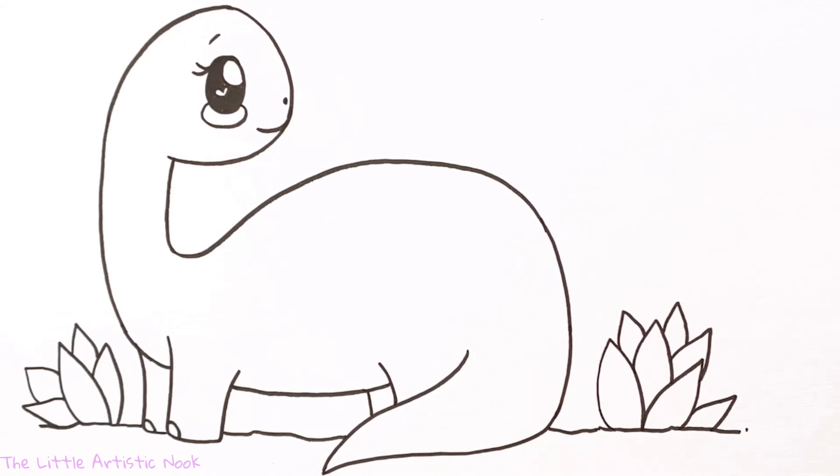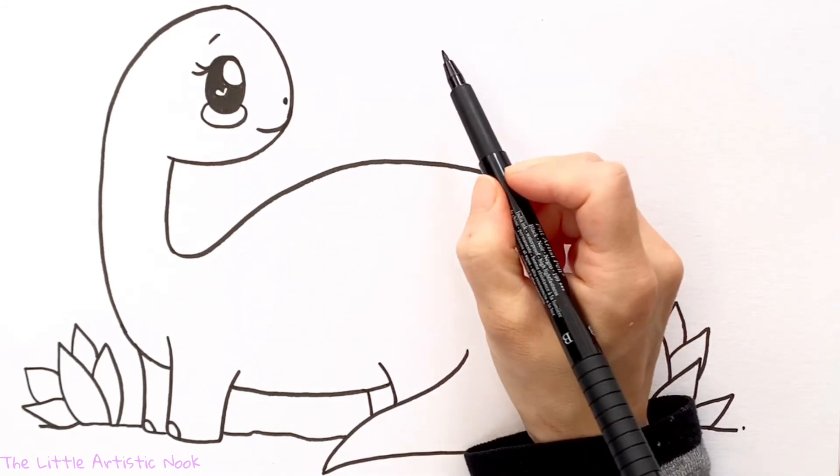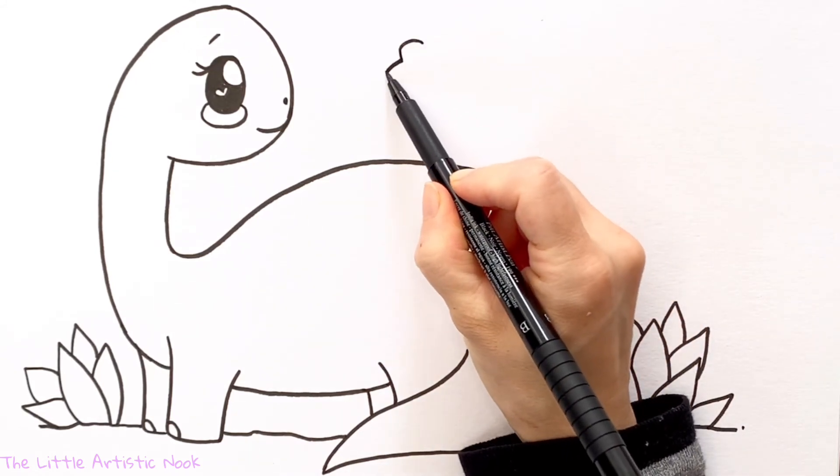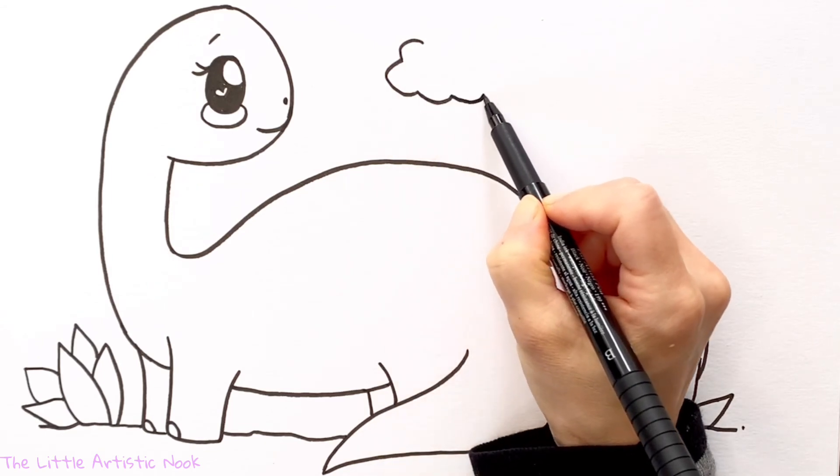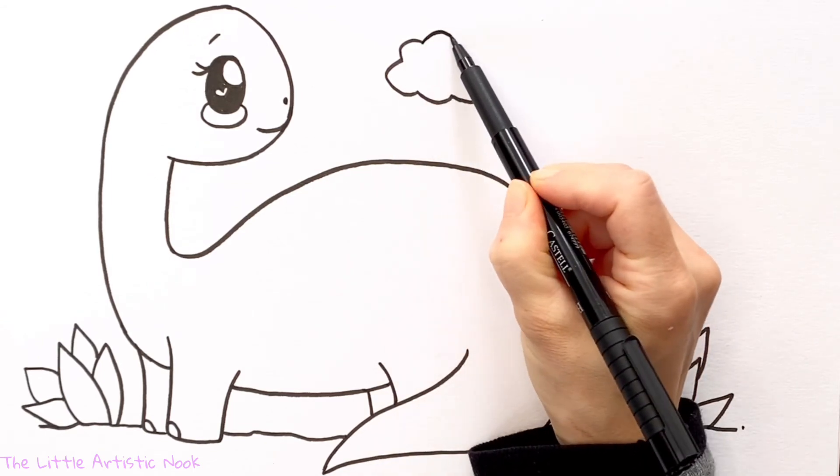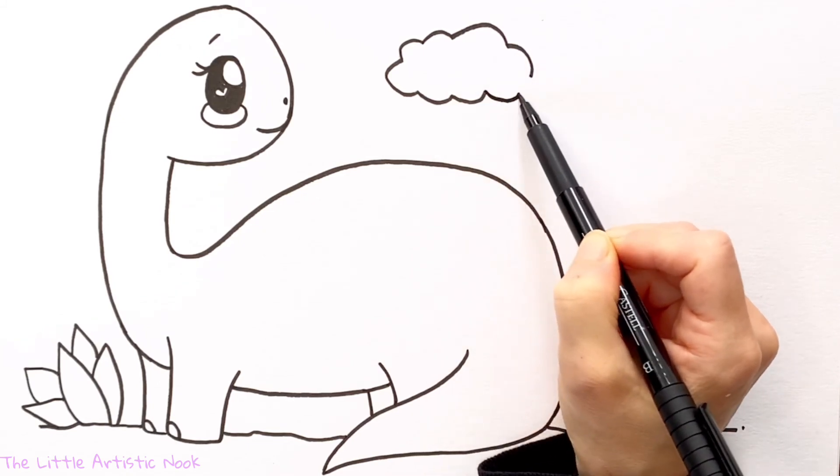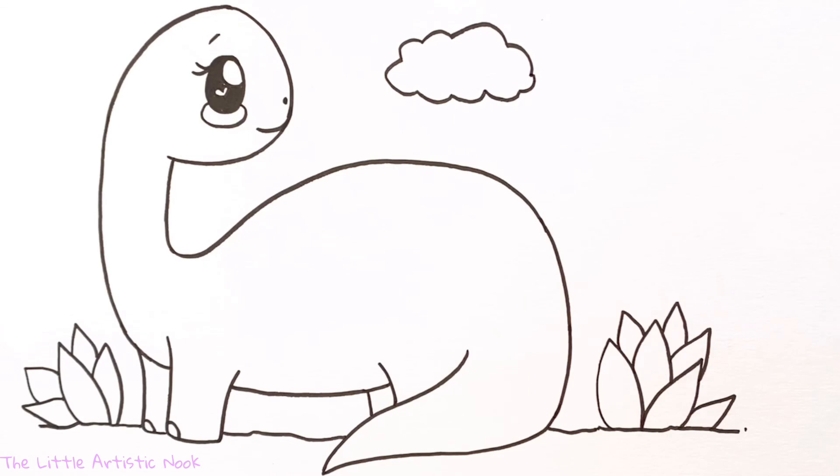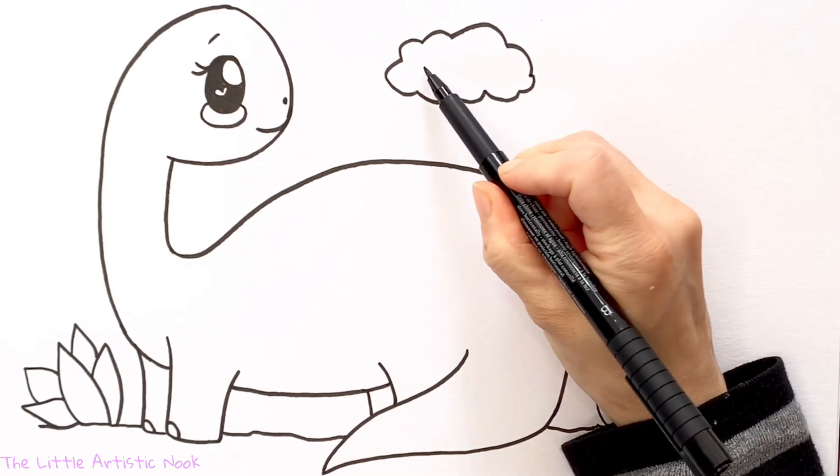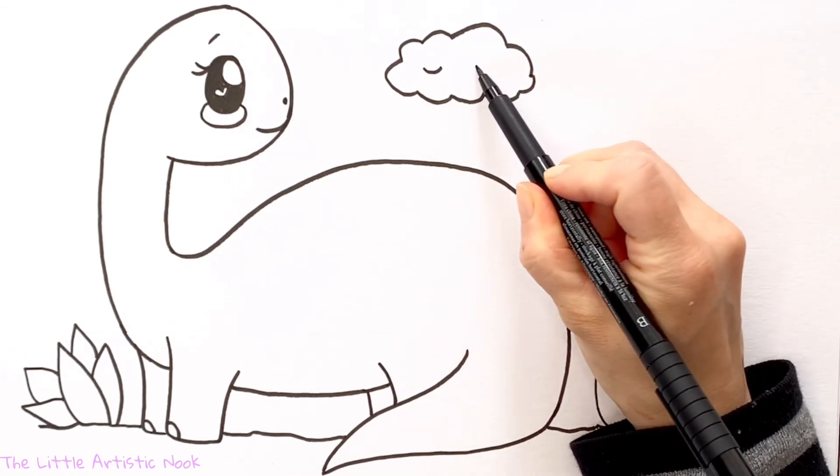And for just one last little whimsical detail, let's just draw a nice little cloud up here just above the brontosaurus's back. You can make it as big and bubbly as you want. And then of course we're going to add in a sweet little face. I'm just going to do some simple little sleepy eyes here—those are just like little smiles—and then just a nice little smile.